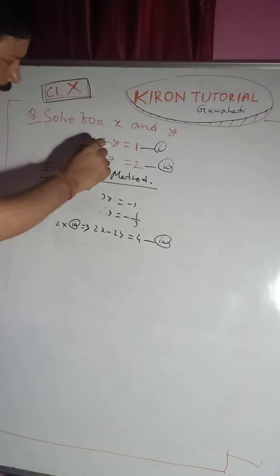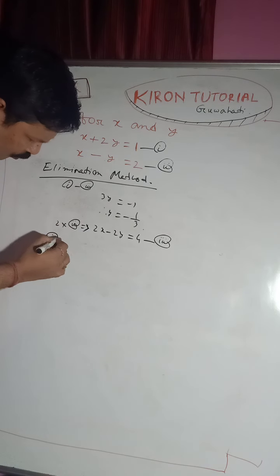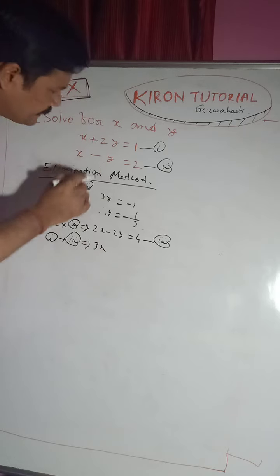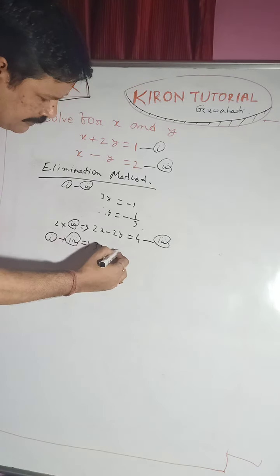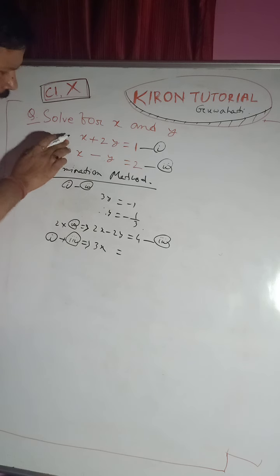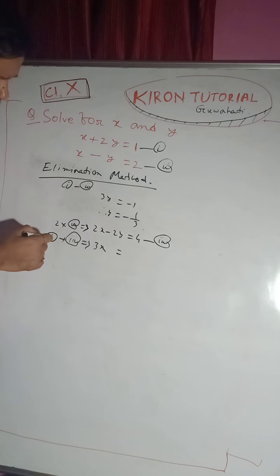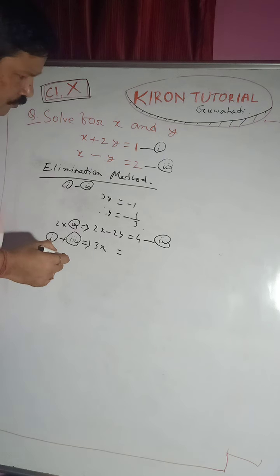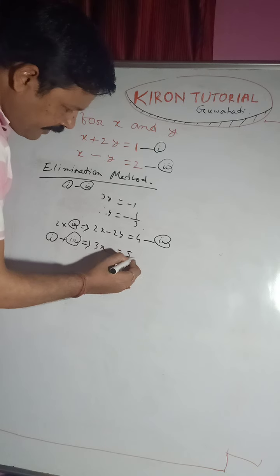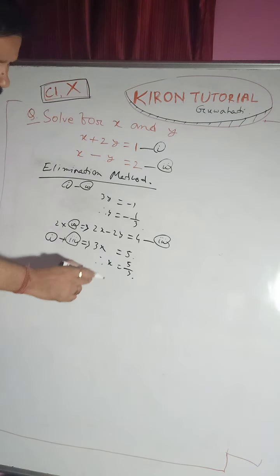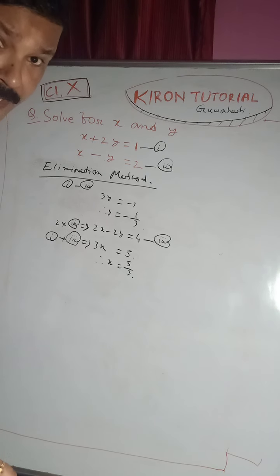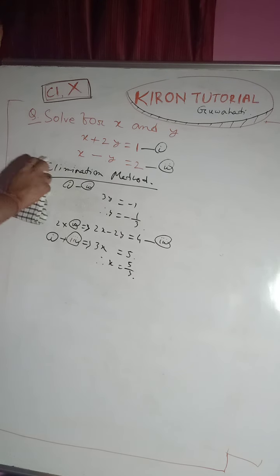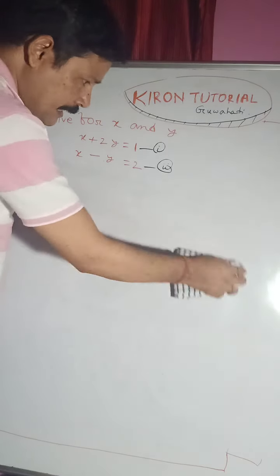Now from equations 1 and 3, the 2y terms have opposite signs so they cancel. Adding equations 1 and 3: x plus 2x gives 3x, and 2y minus 2y cancels, giving 3x equals 1 plus 4 equals 5, therefore x equals 5 by 3. Similarly y equals minus 1 by 3. All methods give the same answer.